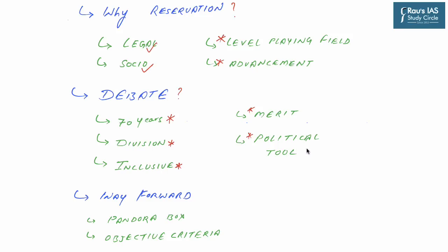This judgment has opened the topic of reservation to wider interpretation. The bench itself said it is to be noted and watched how states use this judgment. The way forward is to formulate objective criteria so that real beneficiaries can be identified, and to periodically recalibrate the financial criteria to avail reservation under the EWS category.